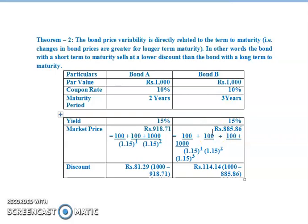Comparing Bond A and Bond B market prices, Bond A (Rs.918.71) is greater than Bond B (Rs.885.86), hence Bond A is preferred in terms of price. However, comparing discounts: Bond A discount is Rs.81.29 (i.e., 1000 - 918.71) and Bond B discount is Rs.114.14 (i.e., 1000 - 885.86). Bond B has a higher discount of 114.14 versus 81.29 for Bond A, hence in terms of discount, Bond B is noted.